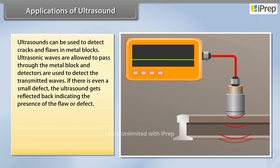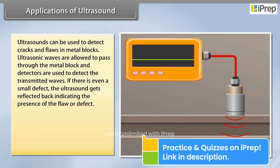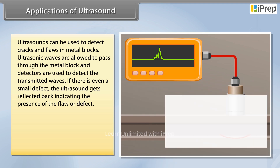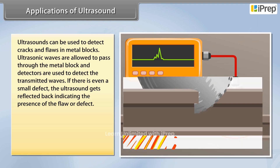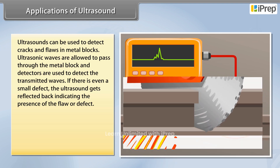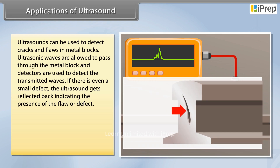Ultrasounds can be used to detect cracks and flaws in metal blocks. Ultrasonic waves are allowed to pass through the metal block and detectors are used to detect the transmitted waves. If there is even a small defect, the ultrasound gets reflected back, indicating the presence of the flaw or defect.